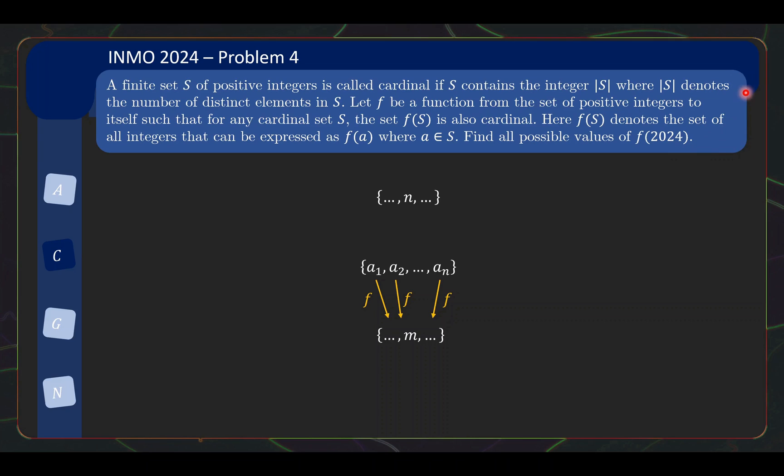So do take a moment to digest this problem if you need some time. But I will assure you that this problem is actually really fun to work through. So let us now try and solve this problem. As usual, it is actually really helpful to think about small cases. So from there we can see what sort of restriction this places on F in order for F to be valid. So what is an example of a cardinal set that is really small? Well, the set {1} by itself is cardinal because it has one element and the number 1 is in it.